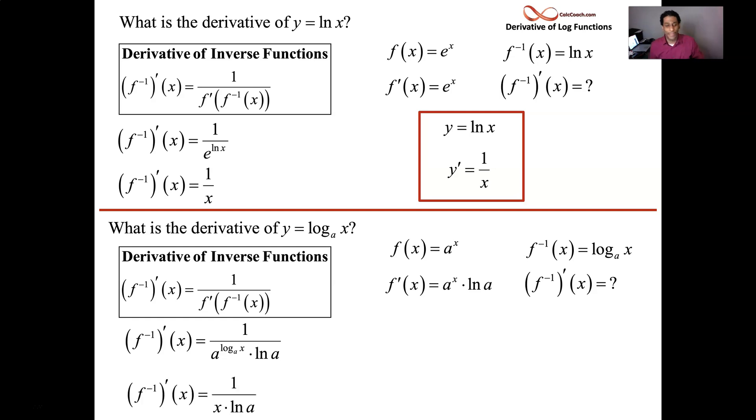a raised to log base a cancels and gives you just x. So this is it. If your function is log base a of x, your derivative is 1 over x, just like natural log. But it has an extra factor in the denominator, the ln of a.